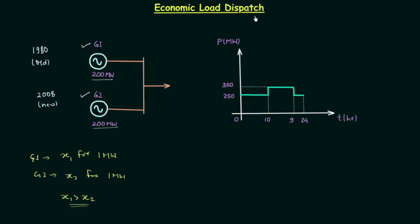Now we will understand what is economic load dispatch. The two generators are used to satisfy a load whose load curve you can see on the screen. The most economical way to satisfy the load is known as economic load dispatch. We need to operate G1 and G2 with this point in mind while satisfying the load.